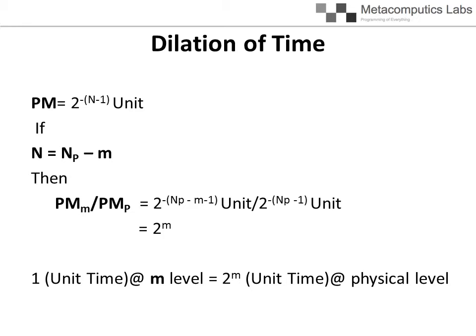From the definition of present moment PM, it is established that PM equals 2^-(N-1) unit. PM decreases with the increase of the N value.